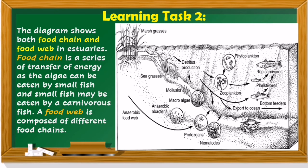For learning task number 2, this diagram shows both food chain and food web in estuaries. A food chain is a series of transfer of energy — for example, algae can be eaten by small fish and small fish may be eaten by a carnivorous fish. A food web is composed of different food chains. What activities do you think may negatively affect the process of energy transfer?